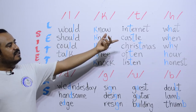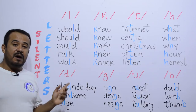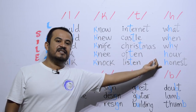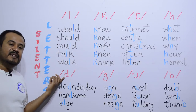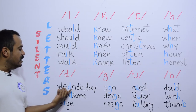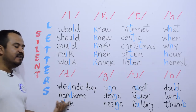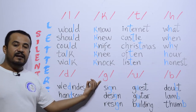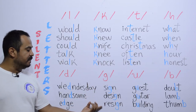Allá tenemos con la letra H silenciosa: what, when, why, our — y muy importante — honest. Muy bien. Ahora tenemos con la letra D: Wednesday, Wednesday — fíjate bien — when, Wednesday, handsome, edge.